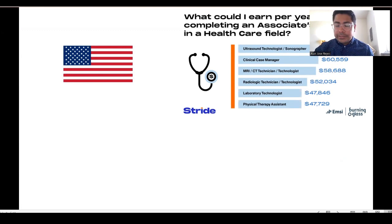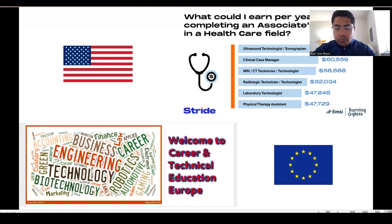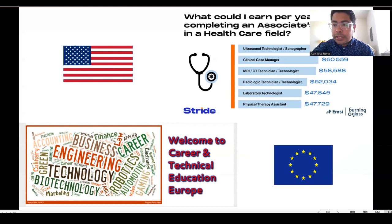We'll start with the United States and what they call associate's degrees. Here we have just an example of the amounts of earnings that people with an associate's degree can make. If we look at Europe, there is a very strong emphasis on career technical education, and we'll talk in more detail about which countries are pioneers in CTE in Europe, in areas such as biotechnology, robotics, accounting, and marketing.